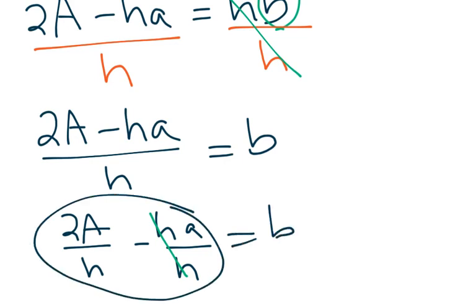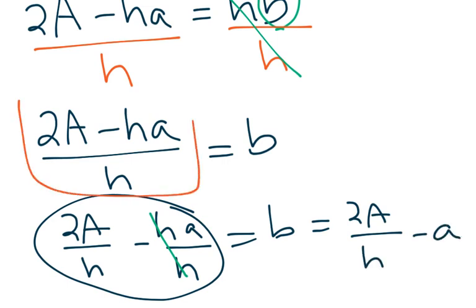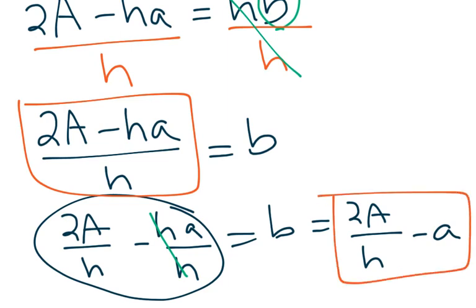But if I were to simplify this some more, that would give me 2A/h - a. So these are equivalent answers - if you got this or if you got this, they're both the same.